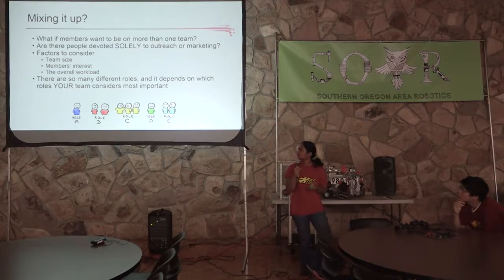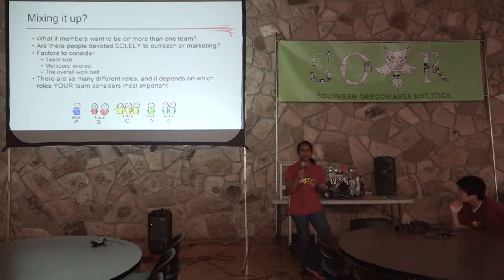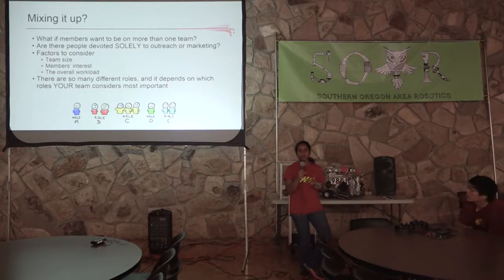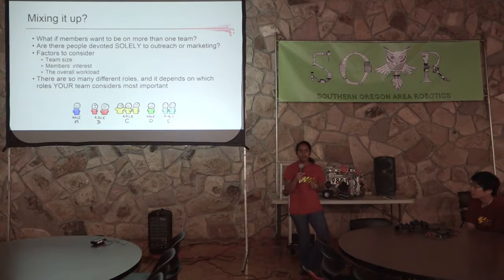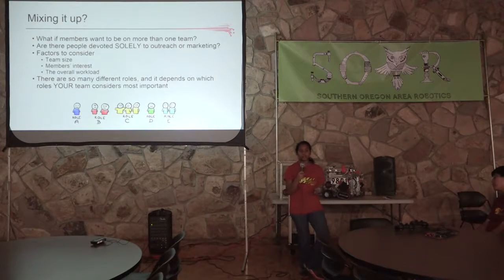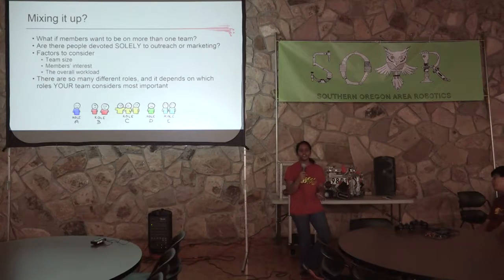There's also the question of mixing roles. What if members want to be in more than one role, or one person is solely devoted to outreach or building? This depends on team size — if you have a lot of people, one or two can be devoted solely to outreach, but if you only have two to five people, everyone needs to focus on building and programming. There's also the overall workload: towards the middle of the season there's less work on the robot, so five people can handle that while the rest work on outreach and judging.